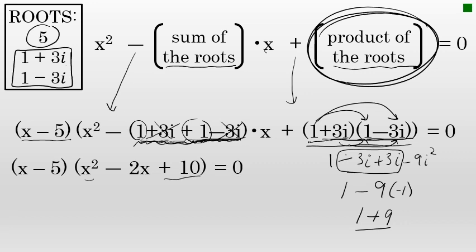So x minus 5 times x² minus 2x plus 10 represents the cubic equation that has the three roots 5, 1 plus 3i, and 1 minus 3i. I have one more step before calling it my final answer: I'll multiply x minus 5 times x² minus 2x plus 10 and call that polynomial equation my final answer.